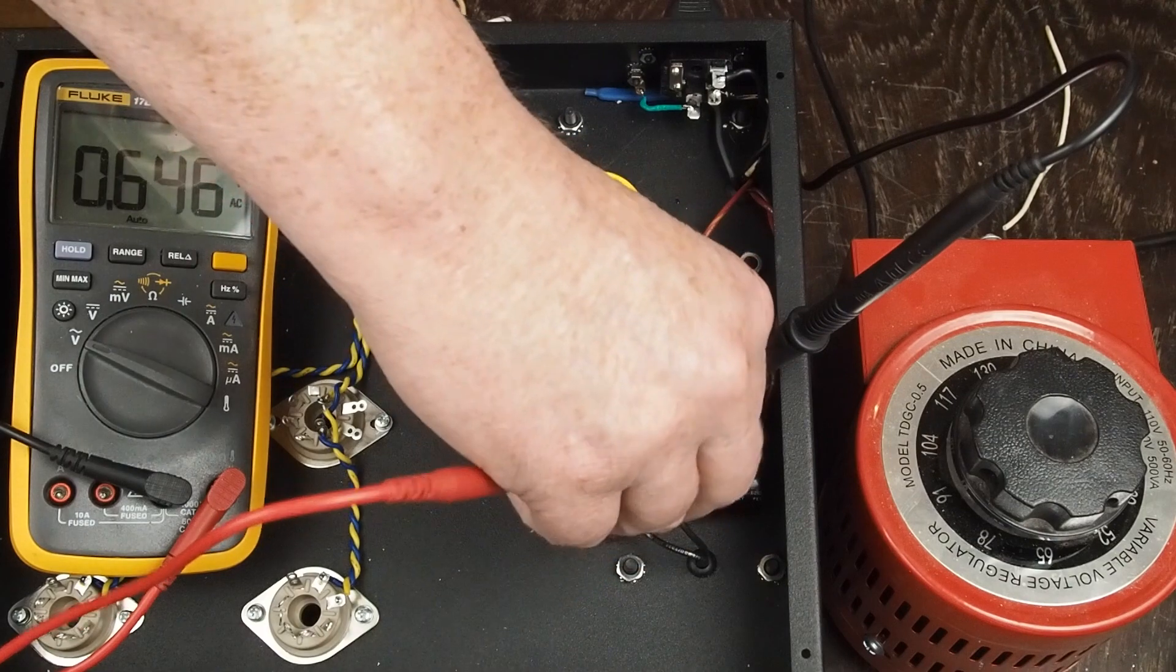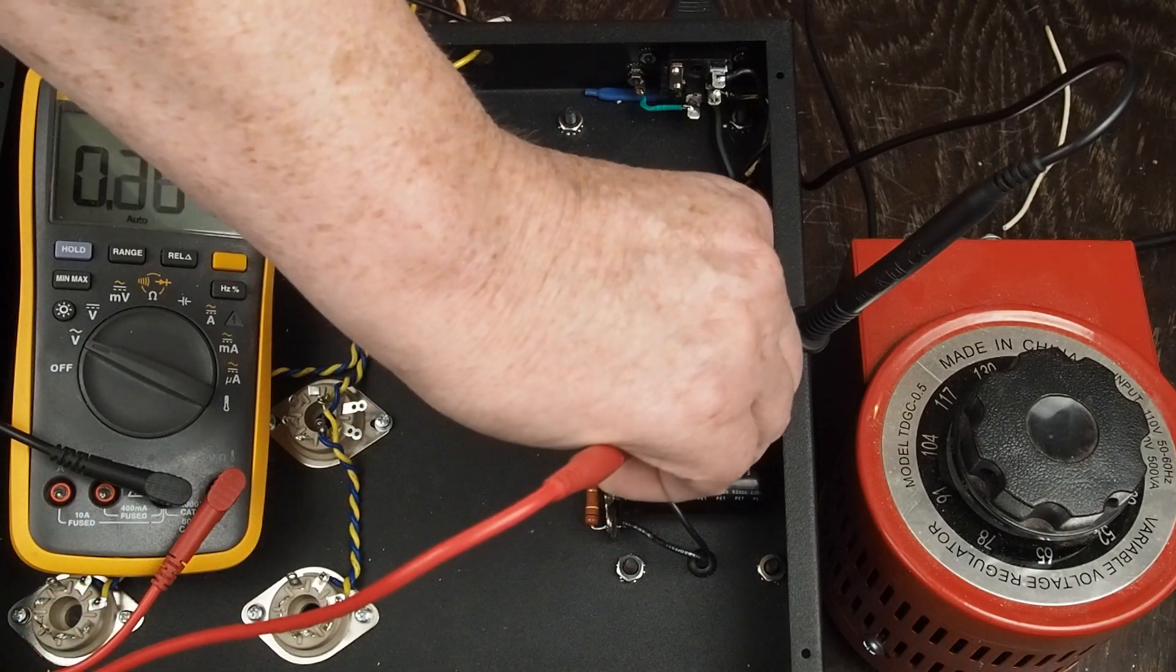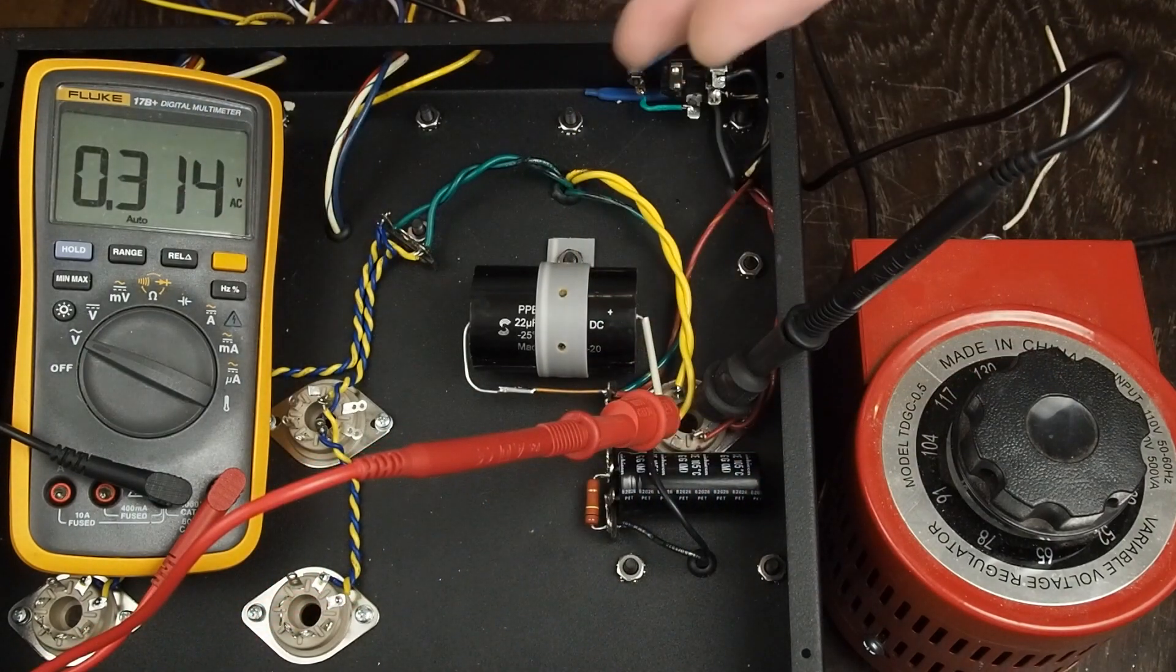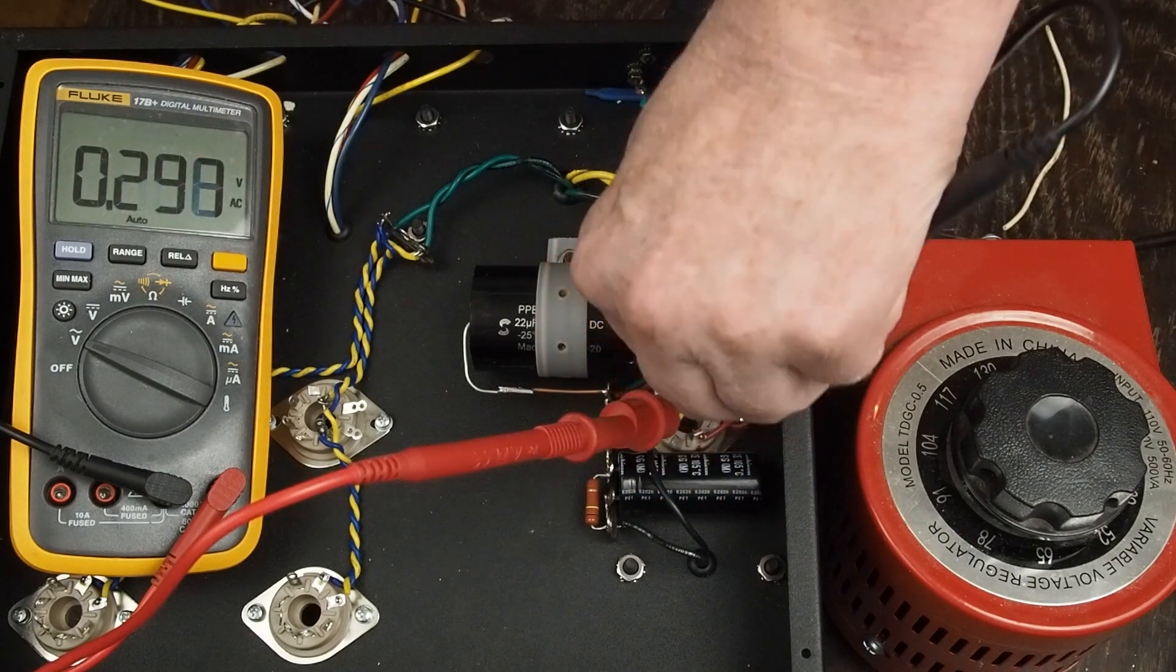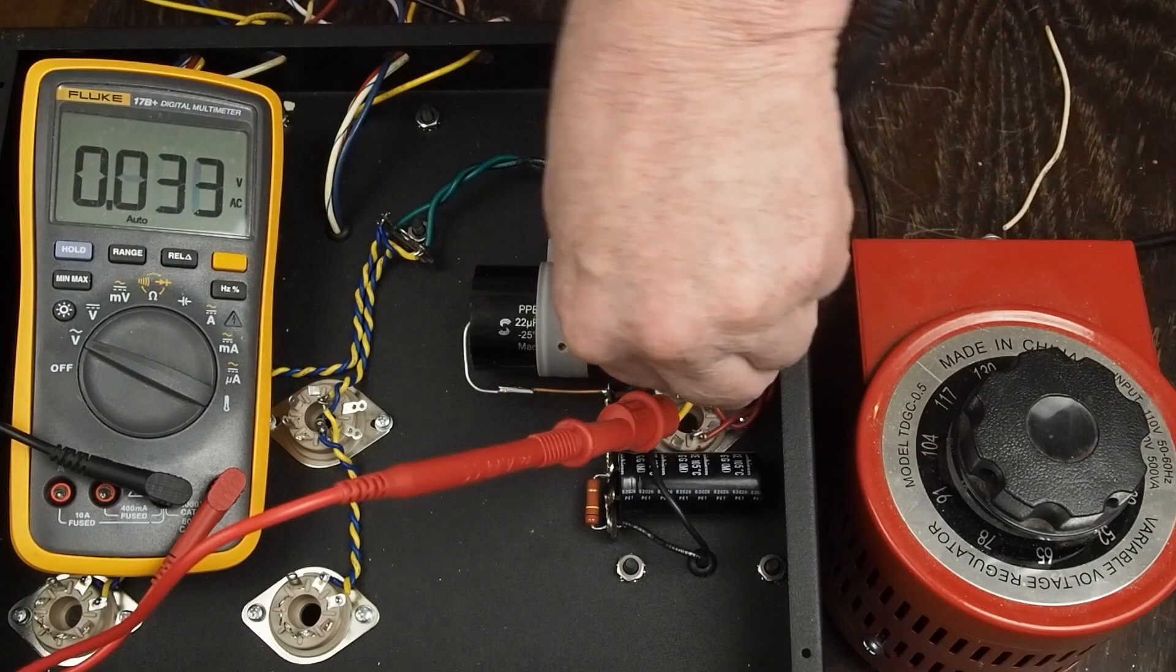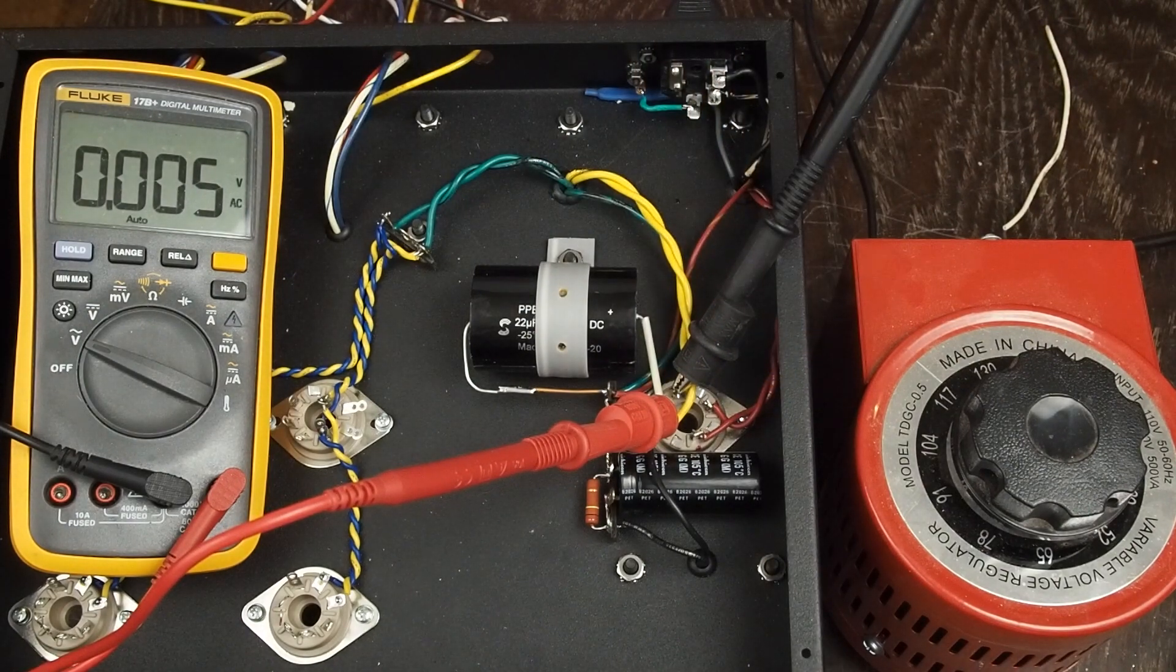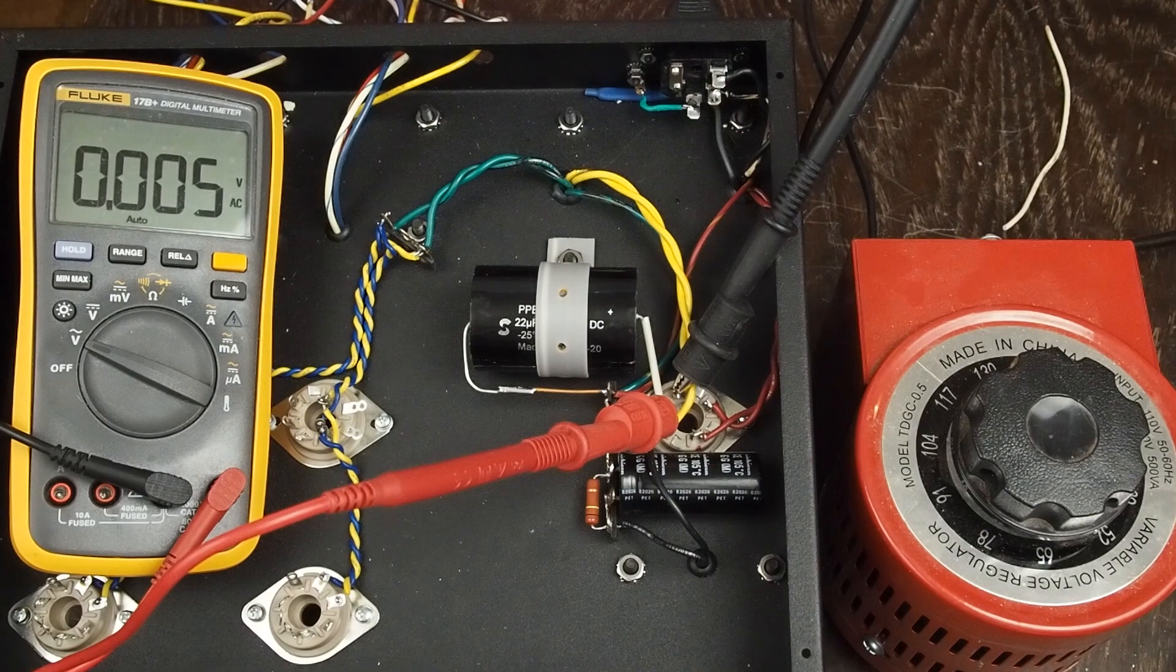So the next thing we want to do is very carefully move it over to these five volt pins. And again as you see I'm always working with just one hand and I have the other hand behind my back. I'm wearing rubber sole shoes. I'm making sure that no other part of my body is touching anything metal that could be grounded. And what you don't want is to have the current go from one hand to the other because it'll go right across your heart and that's what will kill you.